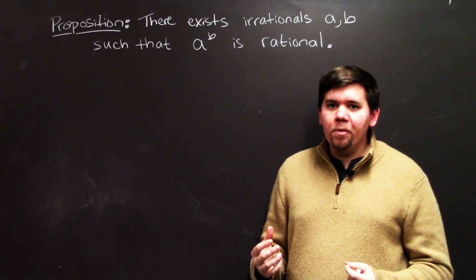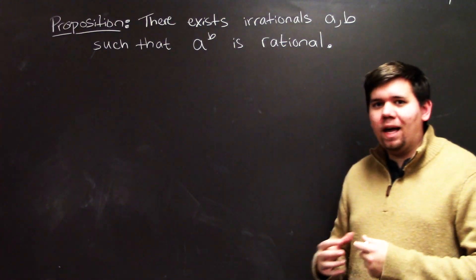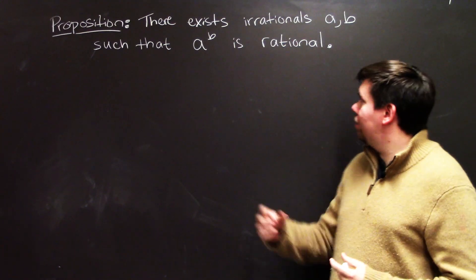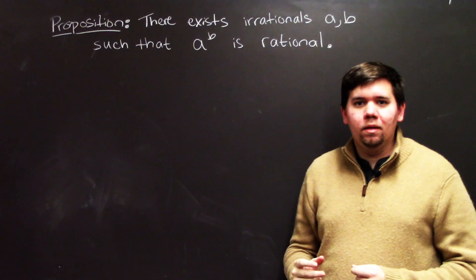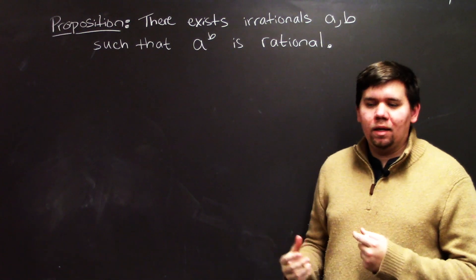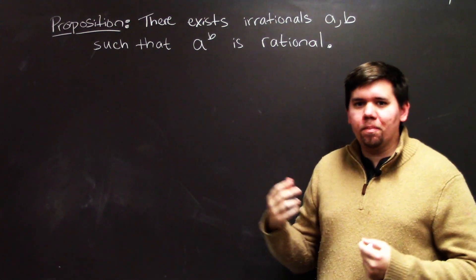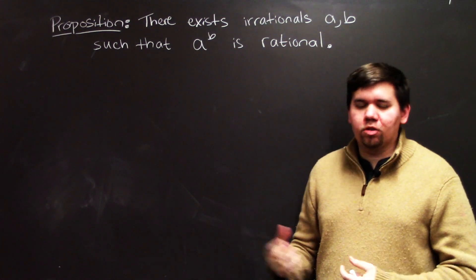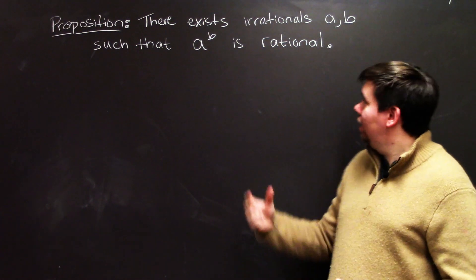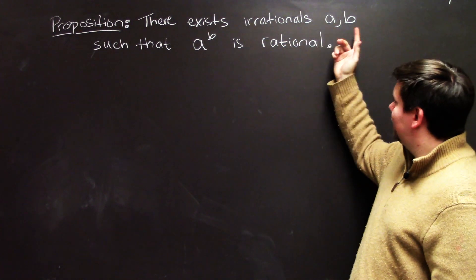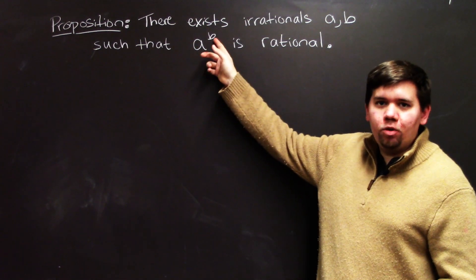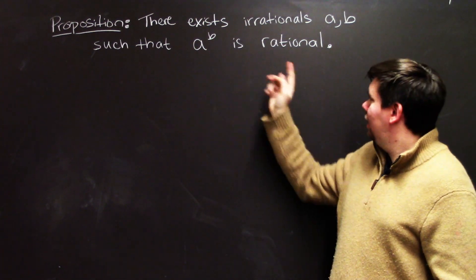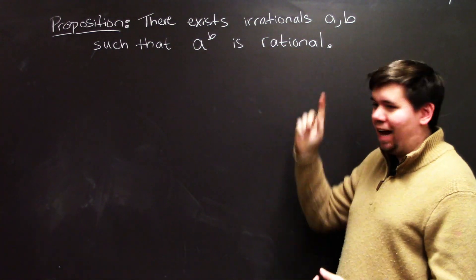The problem I want to think about now is: can we find irrational numbers a and b — numbers like e, pi, or the square root of 2 — such that a to the b is rational?